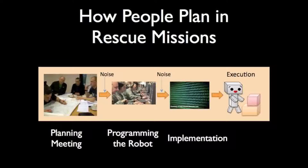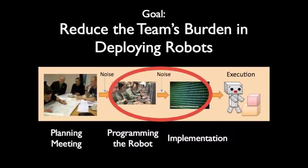First responder teams need to plan and act fast. Their plans are often negotiated on the fly. For a team of humans and robots, a human operator must translate the agreed plan into machine instructions for the robots. The robots also need to coordinate the execution of their tasks with the human team. These human-robot interactions are a significant bottleneck in deploying autonomous systems in rescue missions.